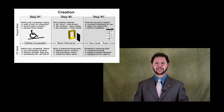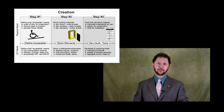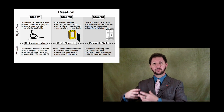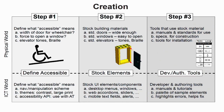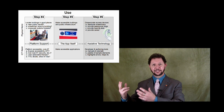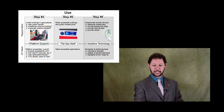We developed the open accessibility framework by learning from the built environment. In the built environment, you have several steps to create something that's accessible and several steps to use something that is accessible. And then in Aegis, we applied these concepts — the creation steps and the use steps — to ICT.